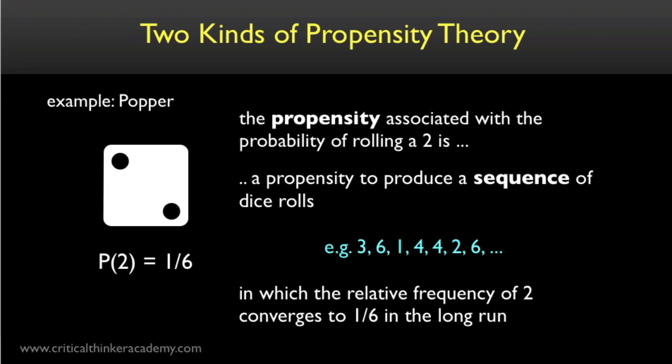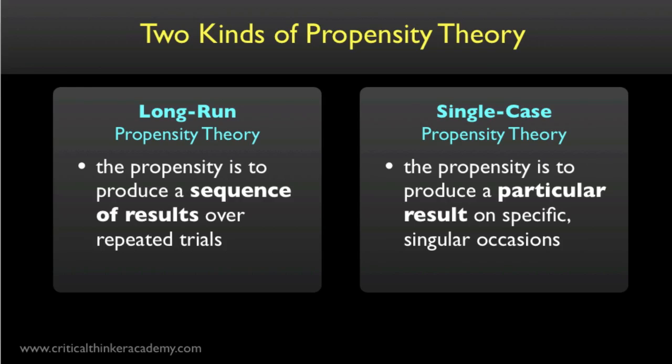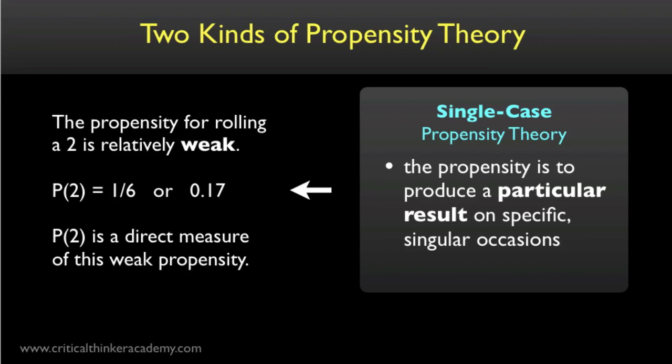Notice that this is not a propensity to produce a particular result on a particular occasion. This is a propensity to produce a sequence of results over repeated trials. For this reason, some people call this kind of propensity theory a long-run propensity theory, and they distinguish it from a genuinely single-case propensity theory, which treats propensities as propensities to produce particular results on specific singular occasions. I know this might seem like just a verbal distinction, but metaphysically the two views really are quite different. For example, for a single-case propensity theory, the propensity for rolling a two on a fair dice roll is relatively weak. It's measured by the ratio of 1 in 6, or about 0.17. That's a low number. The probability is a direct measure of this weak tendency, or propensity, to land two on a single dice roll.